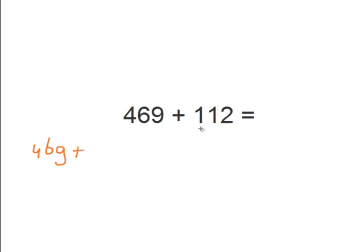469. And now let's break up the 112 into a 100, a 10, and a 2. So let's begin. Let's add 100 first. So that equals 569. So we can cross out the 100.